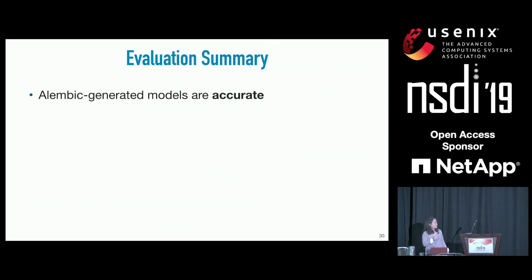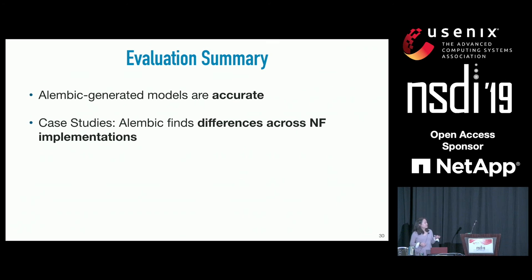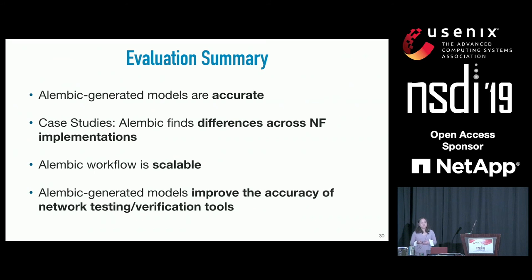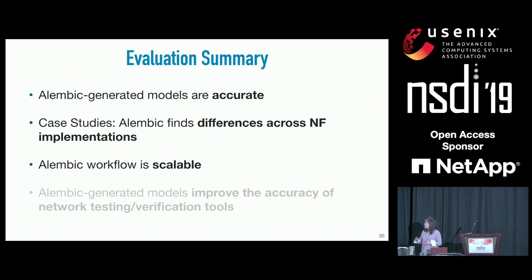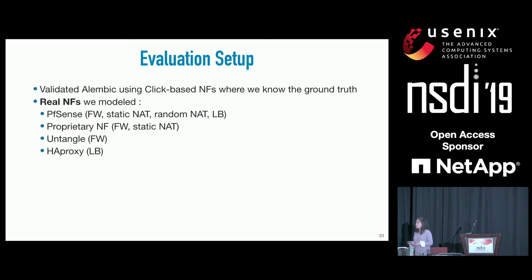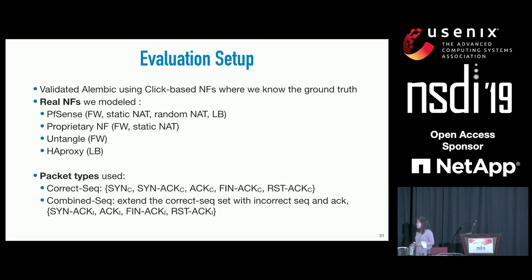Let's look at the evaluation. There are four points: our models are accurate, we find interesting cases across different vendors, our workflow is scalable, and our models increase the accuracy of testing and verification tools. We took Alembic and modeled click-based NFs where we know the exact ground truth, and also applied it to real NFs spanning four vendors of types firewall, load balancer, and NAT. We used two packet types: a correct sequence of standard TCP packets, and a combined sequence that includes out-of-window packets.